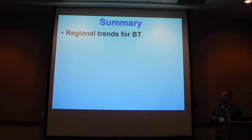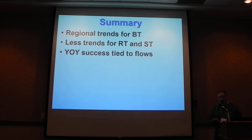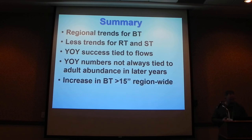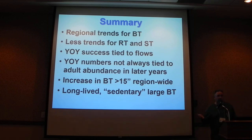In summary, we are seeing some regional trends in adult brown trout abundance, at least in some cases. Those trends are much less clear for rainbow and brook trout, partly because we have fewer sites. Young-of-the-year success is closely tied to winter and spring flows. Somewhat contrary to the literature, young-of-the-year numbers are not always showing up as adults in later years — they may be lost as adults due to things like predation. We're seeing increases in larger wild brown trout throughout the region, and finding these large, long-lived, sedentary — in quotes — brown trout. The same fish may move a quarter mile up and down the river each night to feed and 20 miles to spawn in fall, but in July they're back in that same pool.